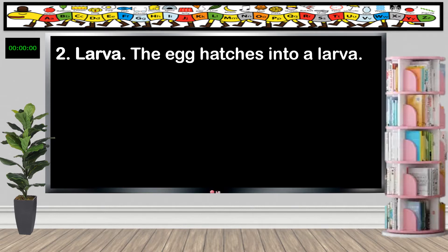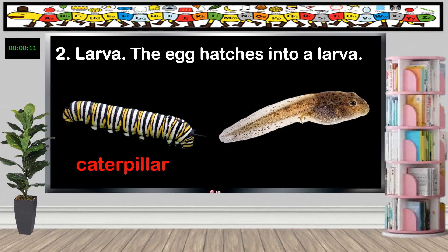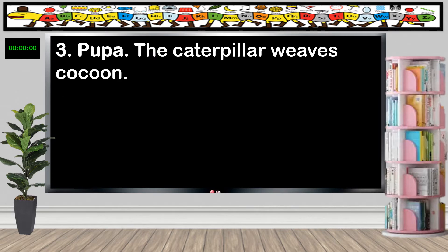The second stage is the larva stage, where the egg hatches into a larva. On the butterfly's life cycle, it is called a caterpillar. On the frog's life cycle, it is called a tadpole. During this stage, tadpoles have gills and they live in the water.